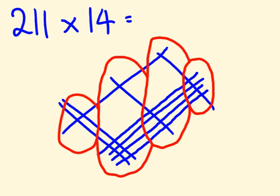So let's see how many intersections we have. We have 1, 2, 3, 4. We have 1, 2, 3, 4, 5. We have 1, 2, 3, 4, 5, 6, 7, 8, 9. And we have 1, 2. Our answer 2,954.